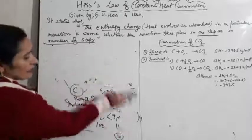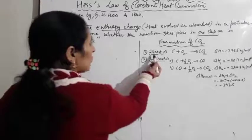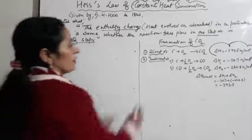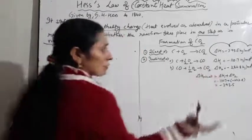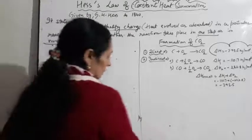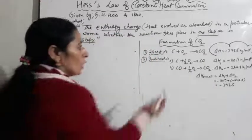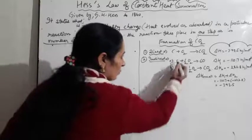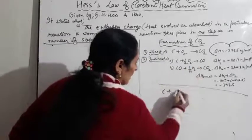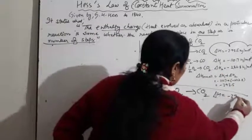Now let's look at the CO2 formation example. Direct path: C + O2 → CO2, delta H = −393.5 kJ/mol. Indirect path: first form carbon monoxide (C + ½O2 → CO), then add ½O2 to CO to get CO2. H1 + H2 gives the overall enthalpy. When you add equations 1 and 2, CO cancels, giving C + O2 → CO2 with total delta H = −393.5 kJ/mol.